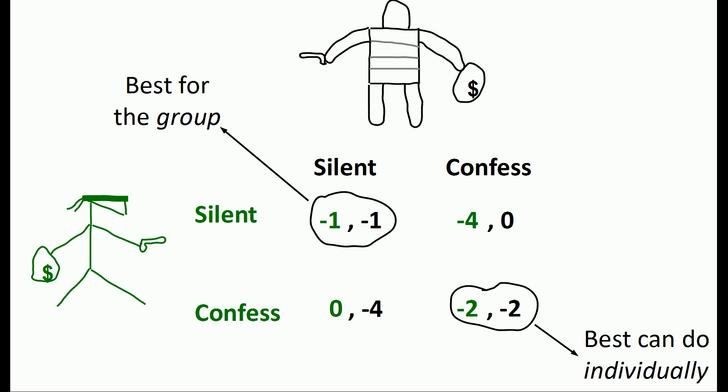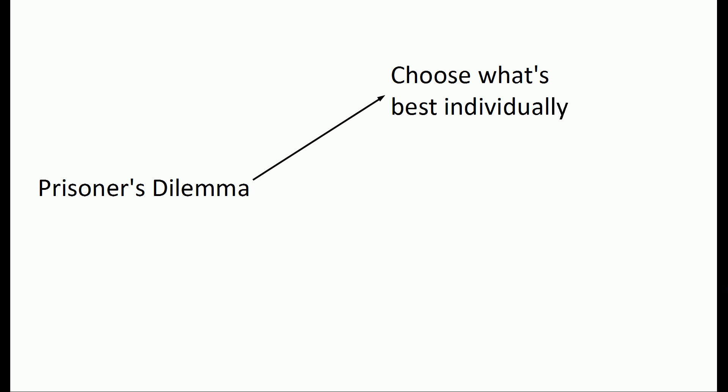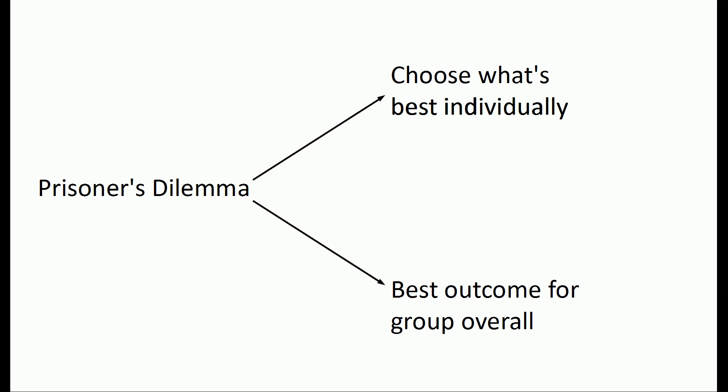This situation is known as the Nash Equilibrium, and this is the crux of the Prisoner's Dilemma — it is a worse outcome for everyone. The Prisoner's Dilemma is a conflict between choosing what's best for you individually and choosing what's best for the group as a whole, and these two things are not equal. While you would like to do the best thing for the group, you can't trust that others will cooperate, so you have to do what's best for you individually, and that ends up worse for everyone.